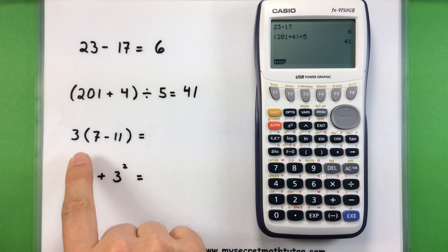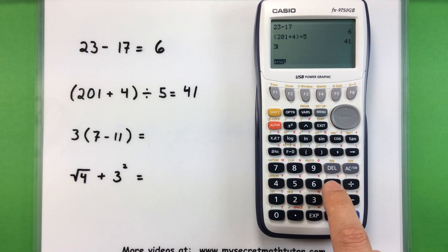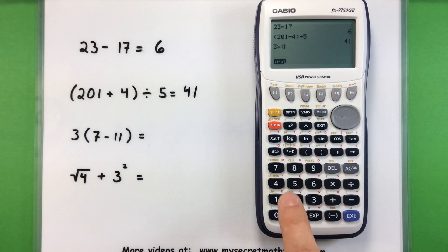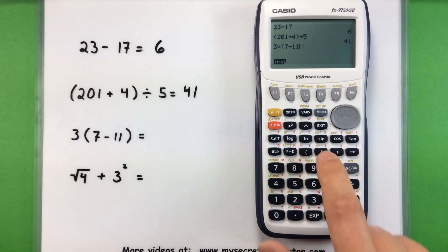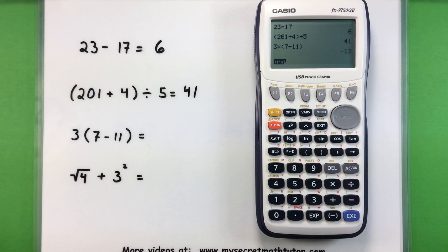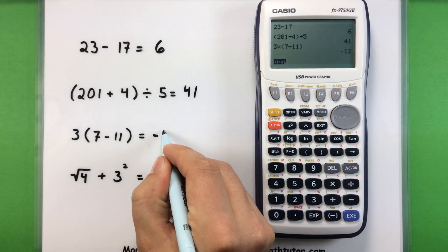All right, for some problems, you may notice that they don't actually have a multiplication symbol in there. This is 3 multiplied by the quantity of 7 minus 11. I think it's a good habit to go ahead and type in the multiplication anyway. Let's go to 3 multiplied by, open parentheses, 7 minus 11, close parentheses, execute. So here we're getting an answer like negative 12.